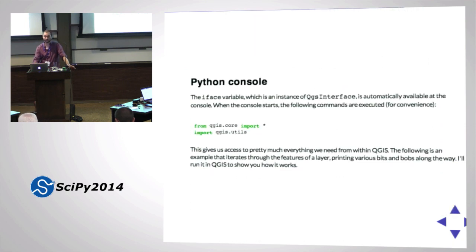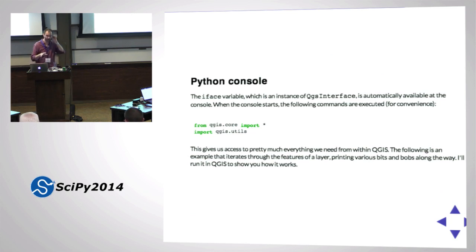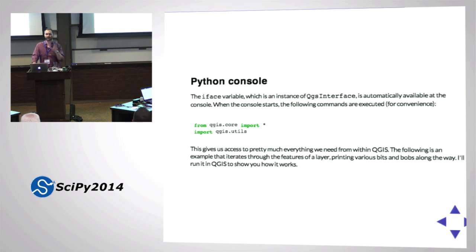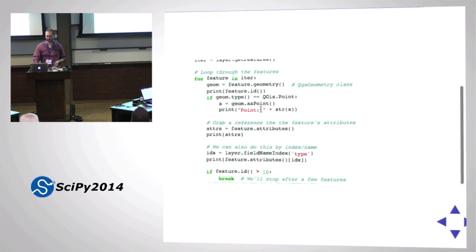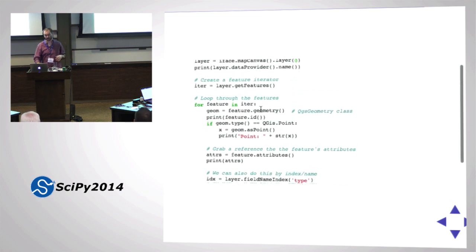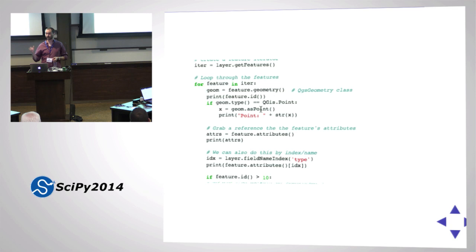From the console, when you open a Python console these lines automatically run: from qgis.core import * and import qgis.utils. That gives you everything needed to interact with QGIS, including an iface object which is the QGIS interface from which you can access everything. Here's some Python code for the console: grab the first layer in the layer list, print its name, iterate through all features, grab their geometry, if it's a point print its WKT, print its attributes, and stop after 10.